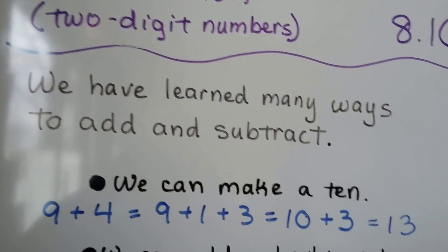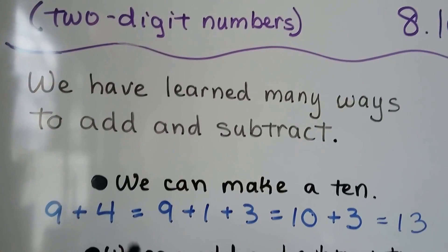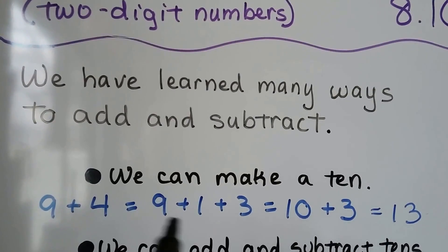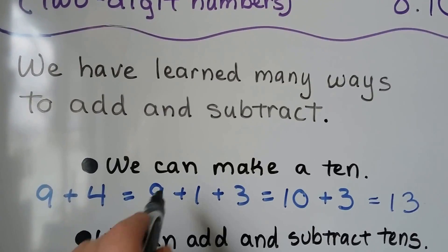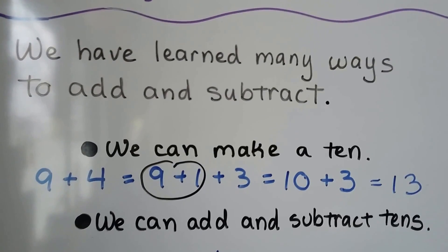We can make a 10 if we need to add 9 plus 4. We can break the 4 into a 1 and a 3 and give that 1 to the 9 to make a 10. Then we can add 10 plus 3. That's equal to 13.